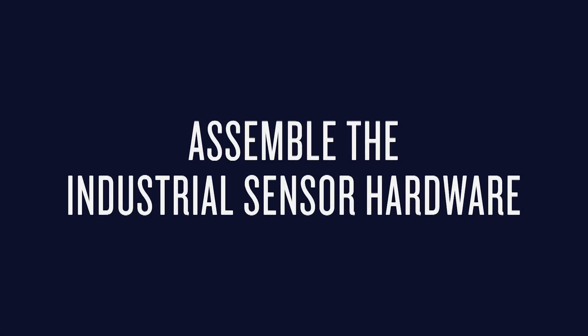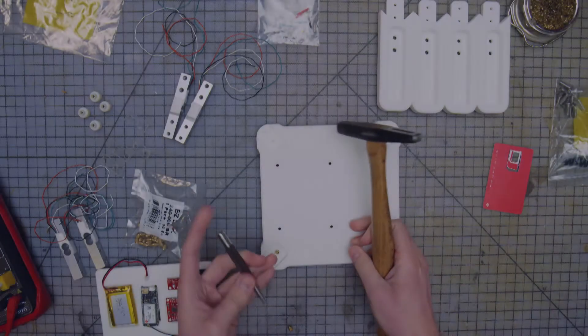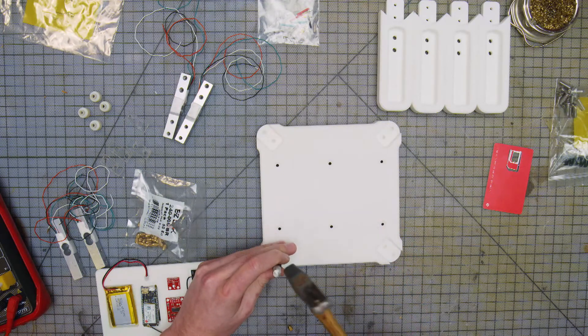The last step is to assemble the bean counter hardware. After you make all of the parts, here is how you put them together.